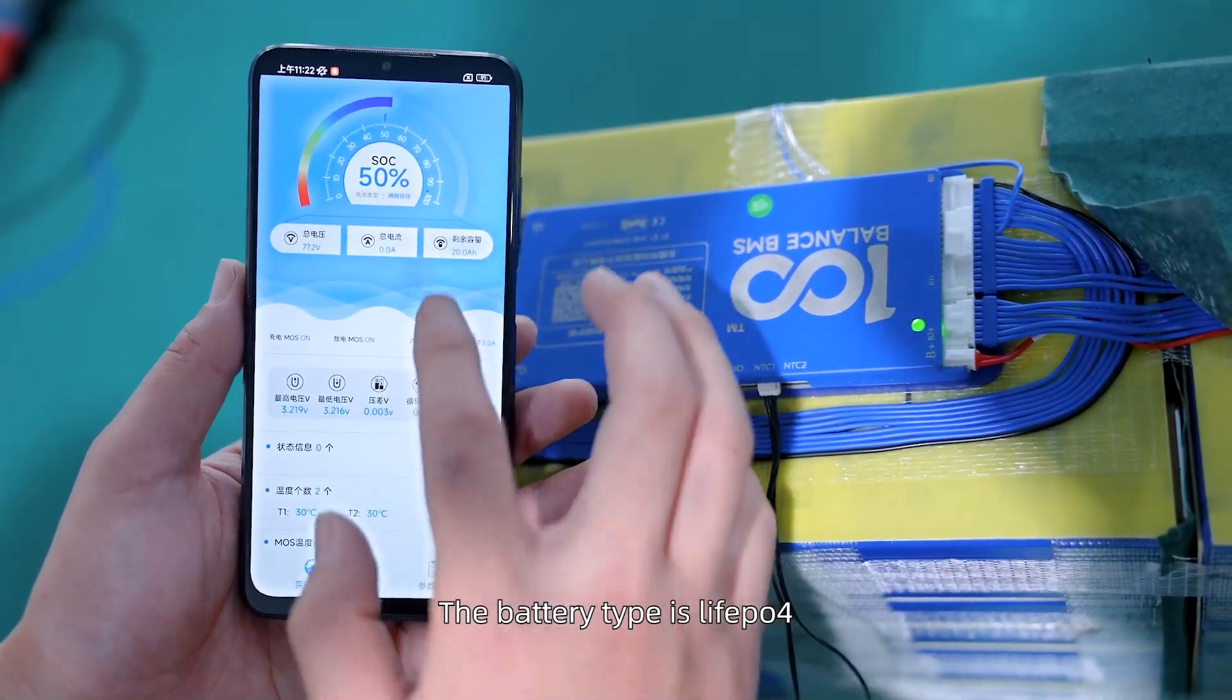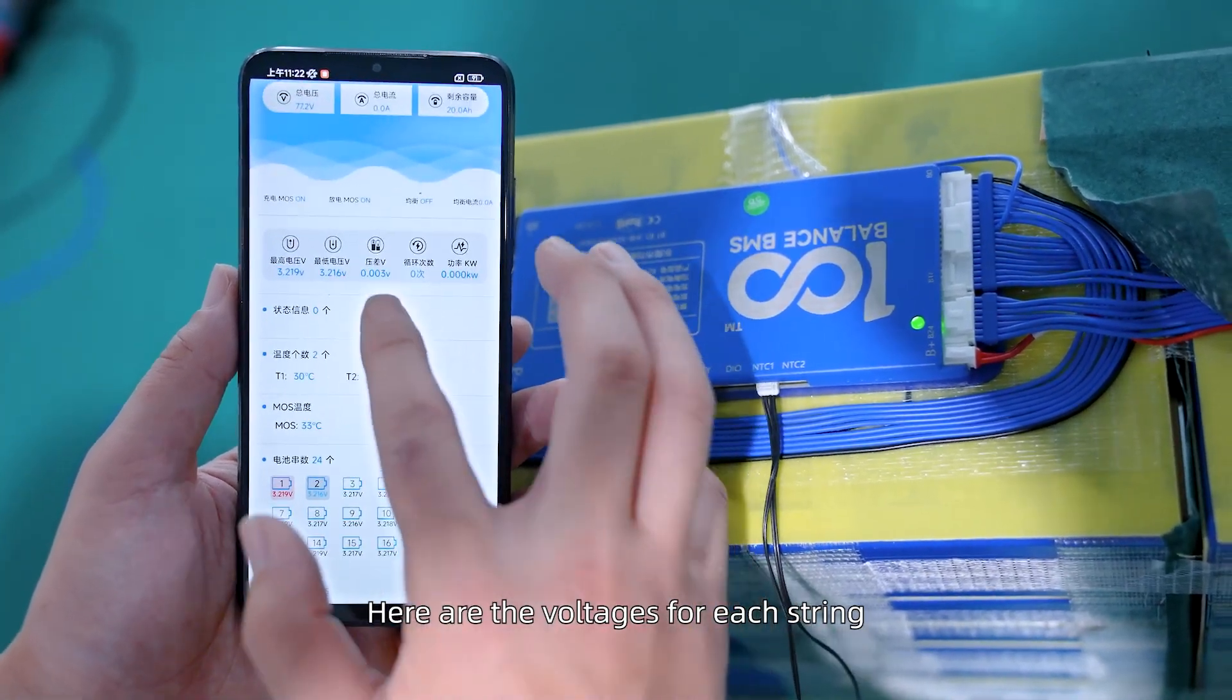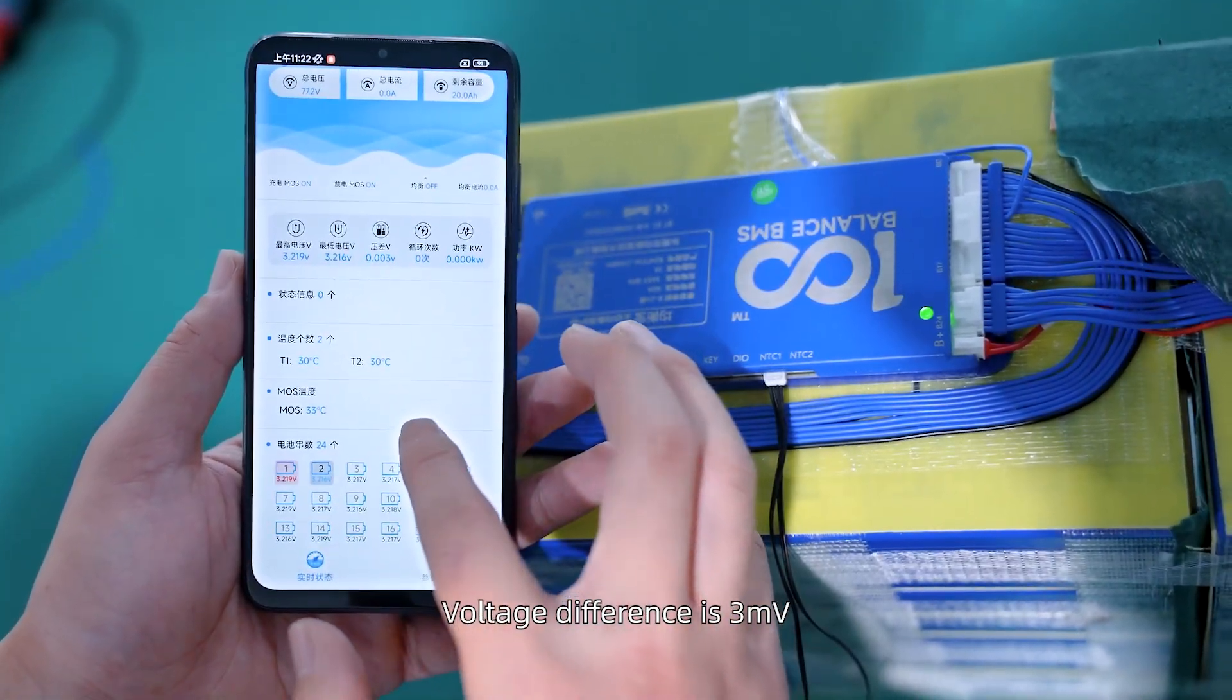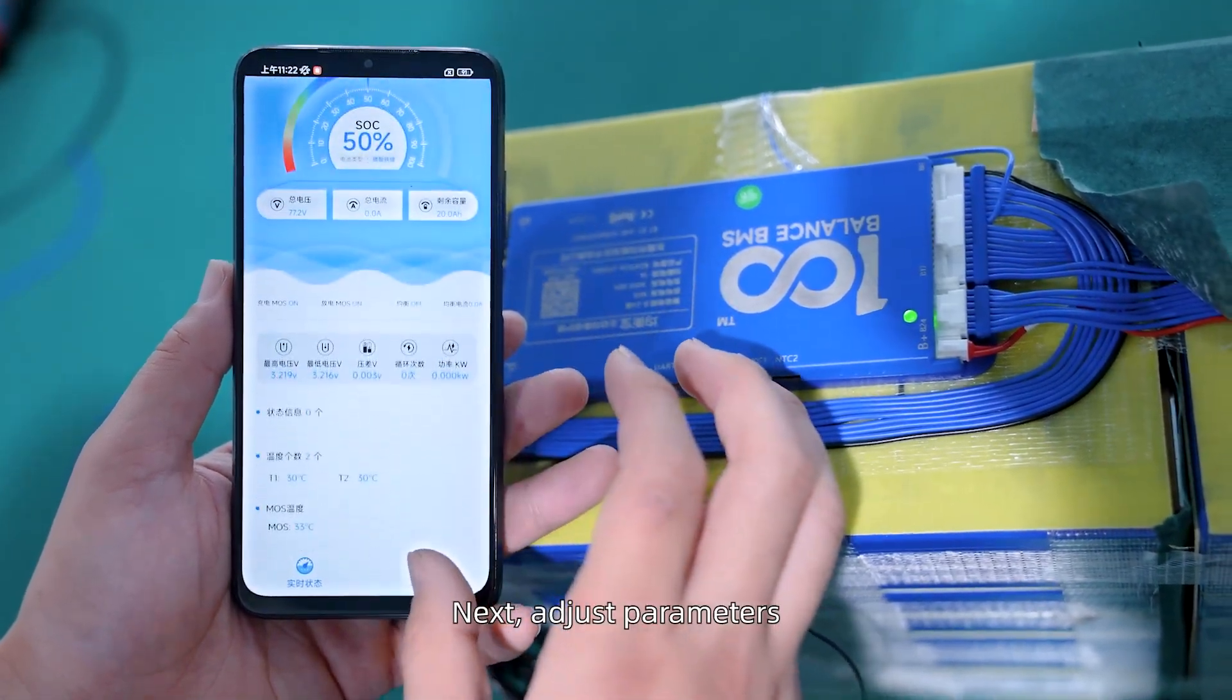The battery type is LiFePO4. Here are the voltages for each string, voltage difference is 3 milliohms. Temperature readings are also available, and let's adjust the parameters.